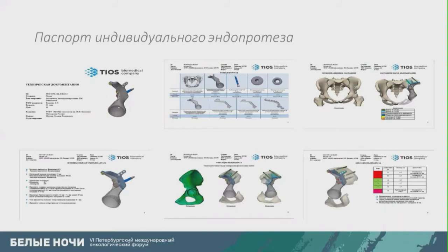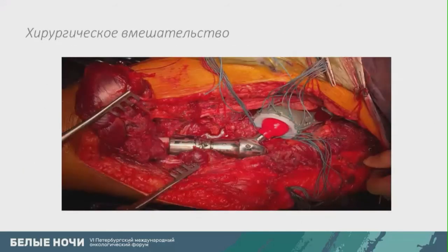Each individual implant comes to the clinic associated with an individual passport, which contains intersection margins, reduced material data, personal patient data, data of the surgeon, and bioengineer data of who developed the implant.